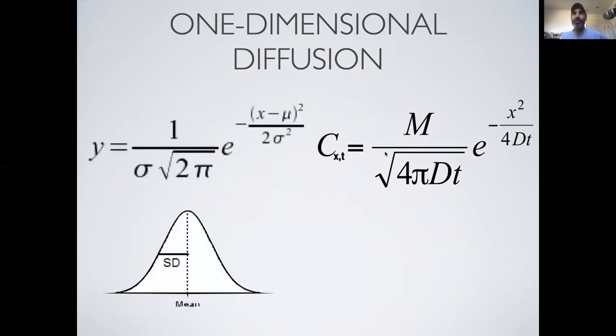So to me, this equation for one-dimensional diffusion looks a lot like this equation over here, which describes the standard Gaussian normal distribution. And in fact, if you do a bit of substitution, the mean mu in the normal distribution is 0 in the diffusion equation, which corresponds to the fact that that mean stayed at where we started the release. We started at 0.